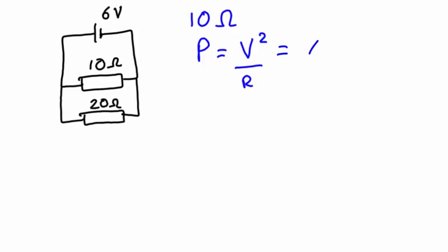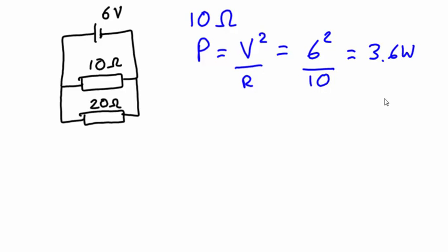Our voltage here is 6 — that's 6 squared divided by our resistance of 10 — which will give us 3.6 watts. Note that that is already much higher than either of the power dissipations from the series circuit.